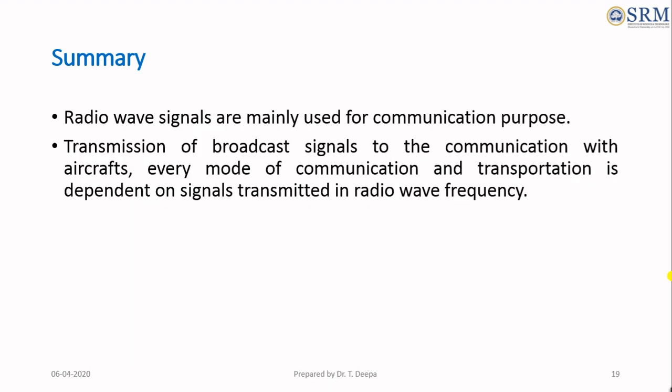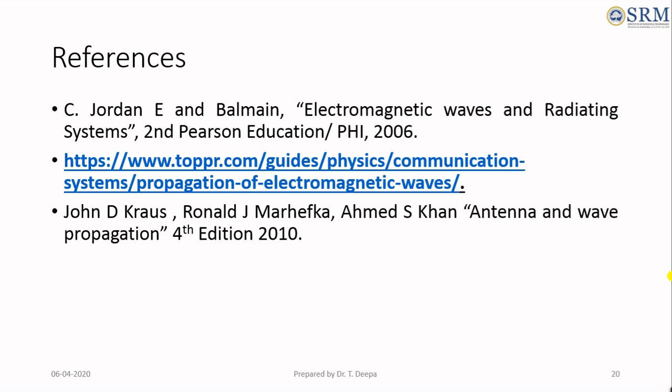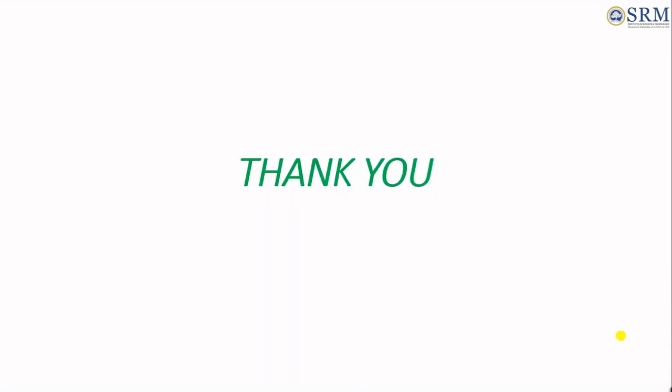In summary, radio wave propagation and modes of propagation: radio wave signals are mainly used for communication purposes — transmission of broadcast signals and communication with aircraft. Every mode of communication and transportation is dependent on signals transmitted in radio wave frequency. The main objective of radio wave propagation is to transmit signals securely without any error. It is concluded that radio wave propagation is an important branch of communication studies. These are the references followed for the topics of radio wave propagation and modes of propagation. Thank you.